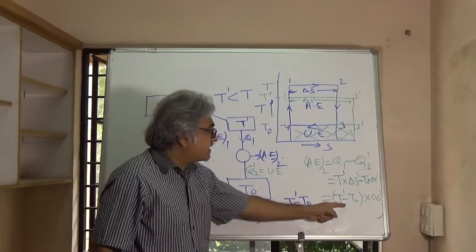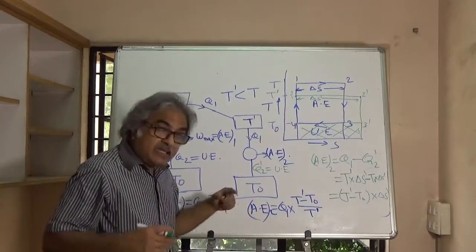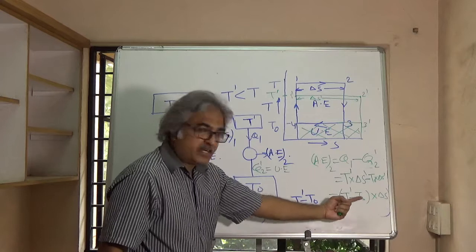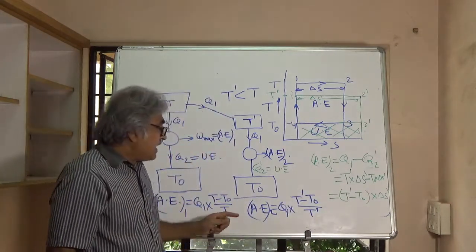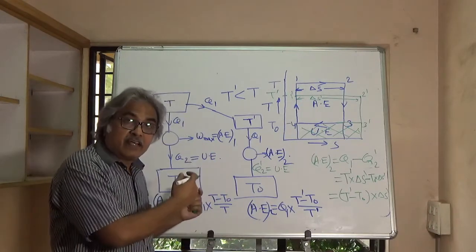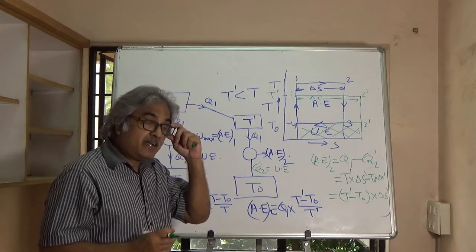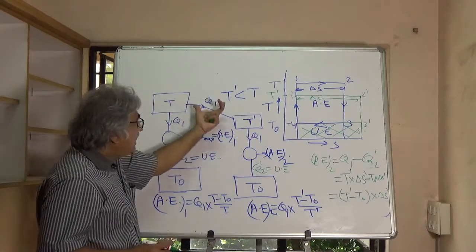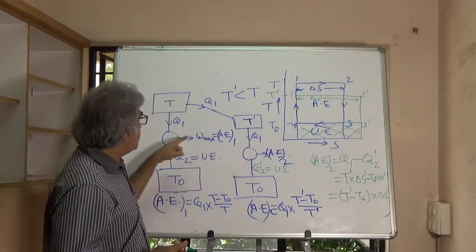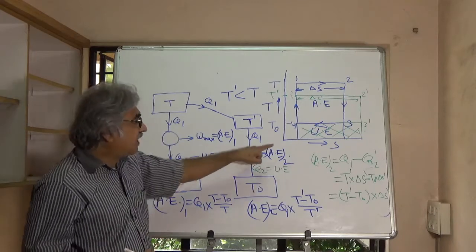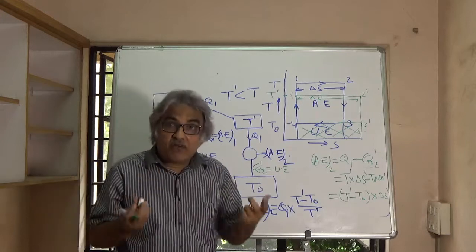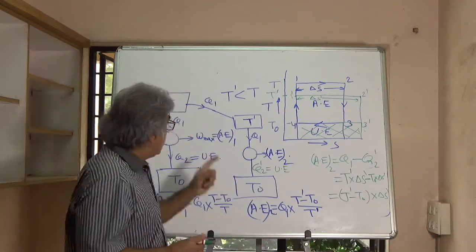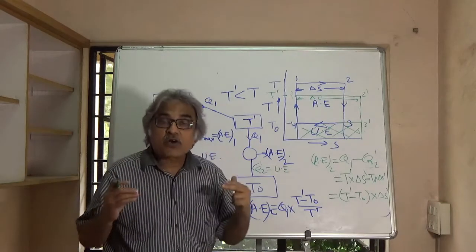Comparing the two available energies, we can see that the new available energy is less than the earlier available energy. This means that because of irreversible heat transfer from T to T dash, the quantity of heat has remained the same — Q1 is supplied in both cases — but the work output from the engine has reduced. That means the quality of heat has gone down; less of that heat can be converted into work. So because of this irreversible heat transfer, there is a loss of available energy.